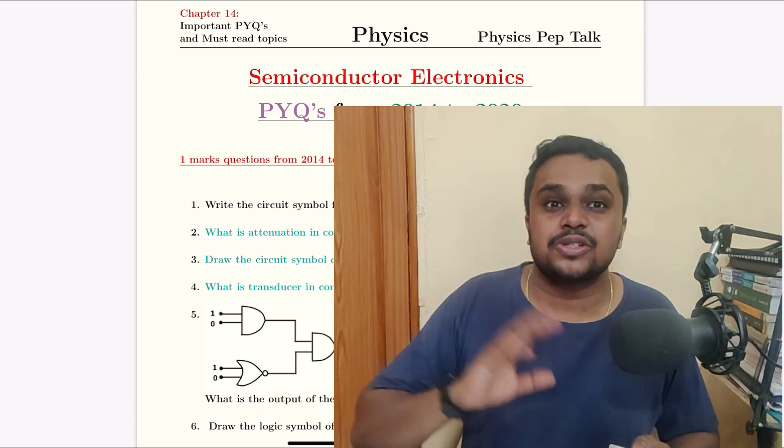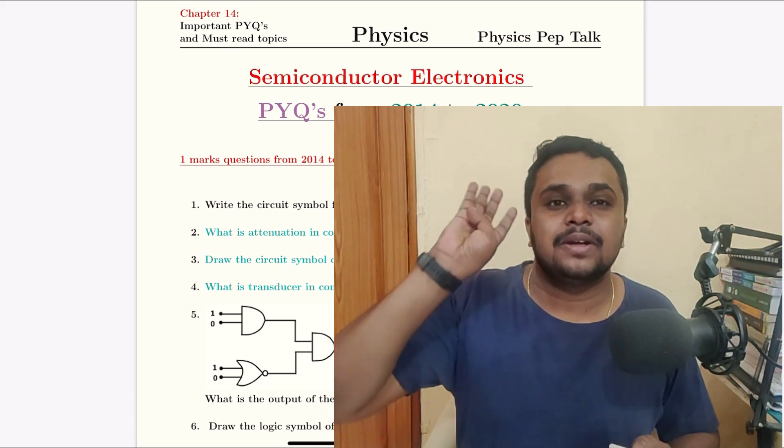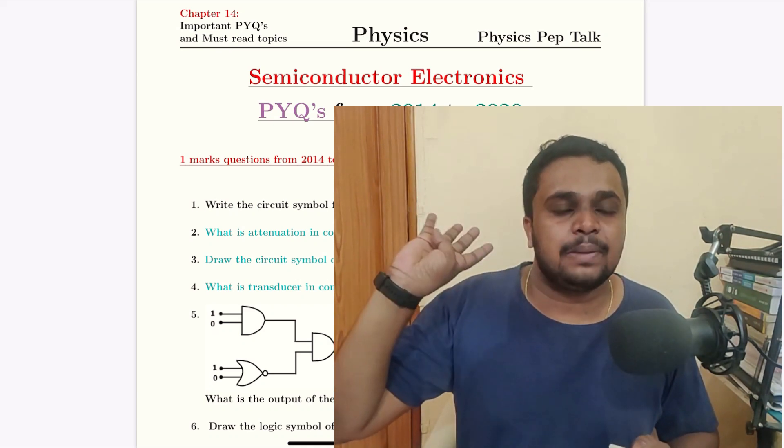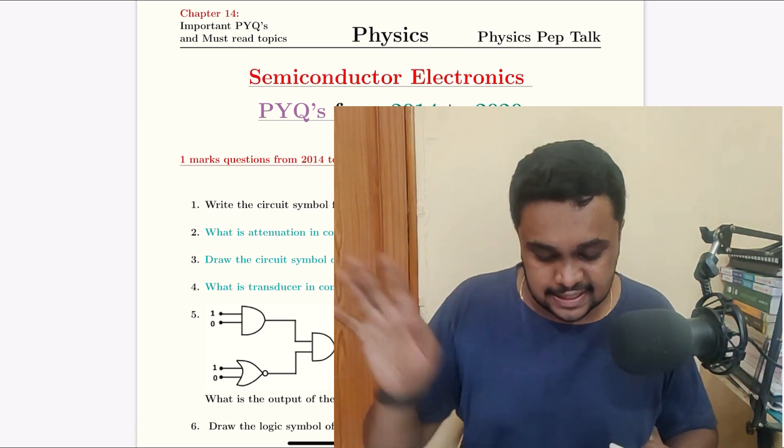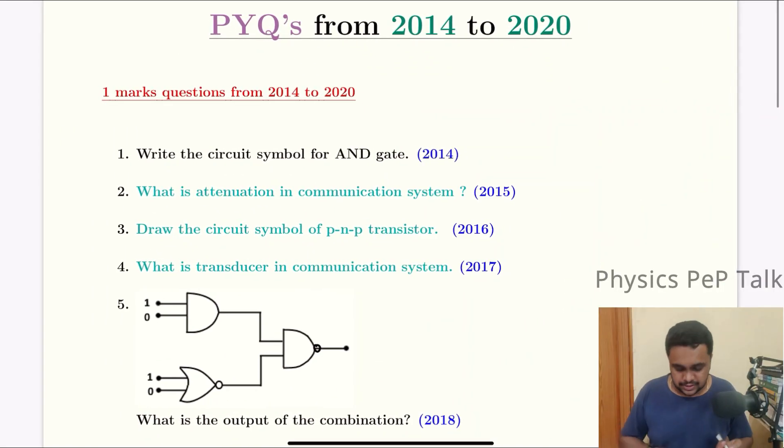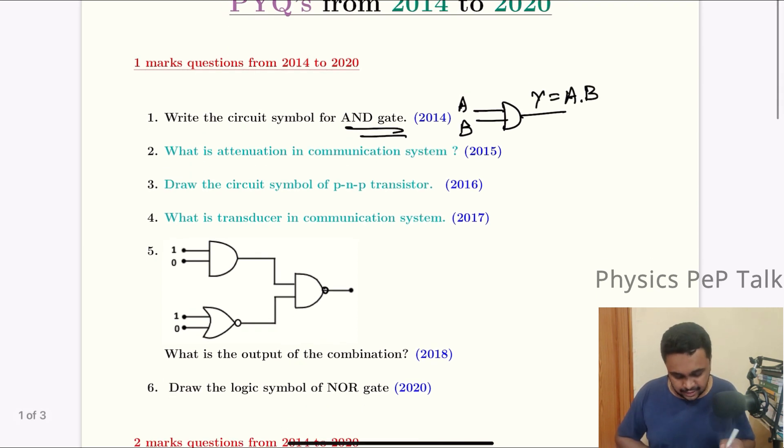We will delete the syllabus here. For example, we will use the full and complete communication media, transistors and amplifiers. We will not discuss that. One more question: write the circuit symbol of AND gate. This is the input and output. This is the circuit symbol of AND gate.